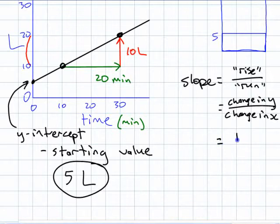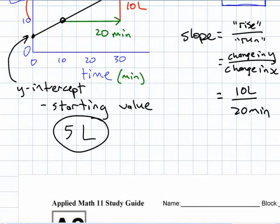So the slope then is 10 liters divided by 20 minutes. What does that divide to? 10 divided by 20, what does that give me? 0.5 liters per minute.